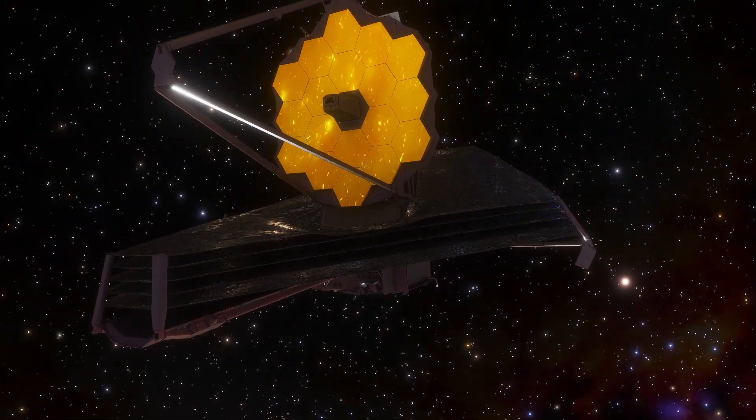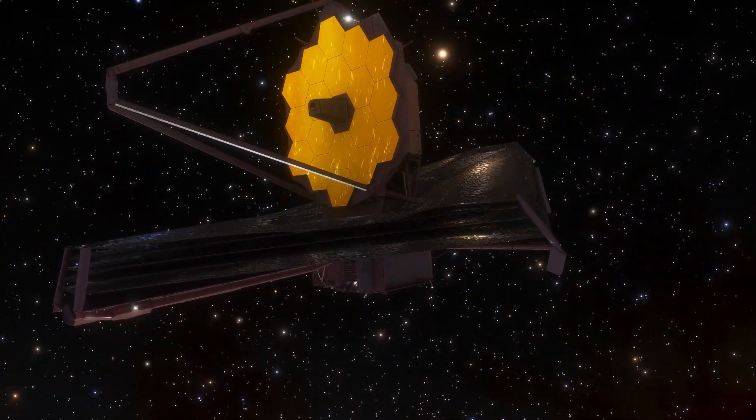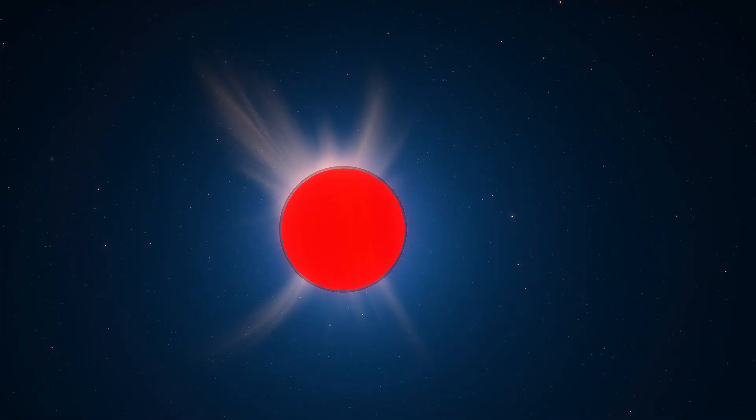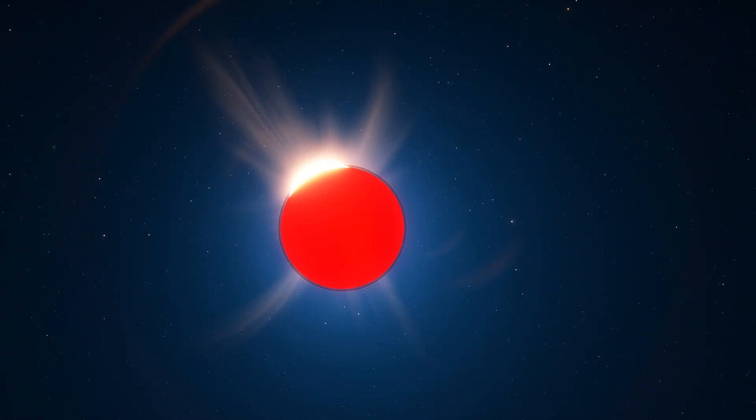But NASA's Webb telescope is so advanced and sensitive that it can detect not only the dimming of light but also the starlight that passes through the planet's atmosphere.